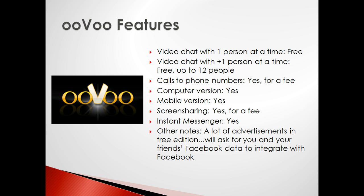Uvu lets you send up to 5-minute video messages to someone's email, and offers a YouTube viewing party system where you can watch YouTube videos live with up to 11 other people. Uvu will let you call phone numbers in a few countries for a fee, and you'll have to buy a premium subscription if you want to use screen sharing and remove advertisements.